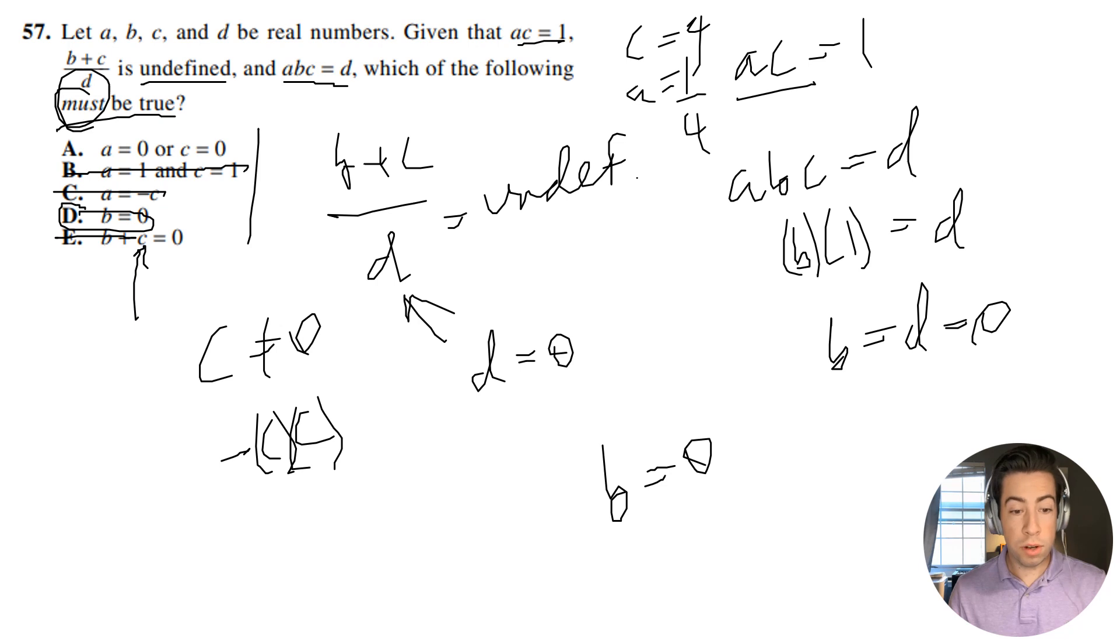And then A equals 0 or C equals 0. No, this can't be true because if we're multiplying the two together we would get 0, not 1. So that is out. Okay, so the only answer choice that would work here and the one that we actually proved is D. All right guys, if you have any questions feel free to comment below and I'll see you in the next video.